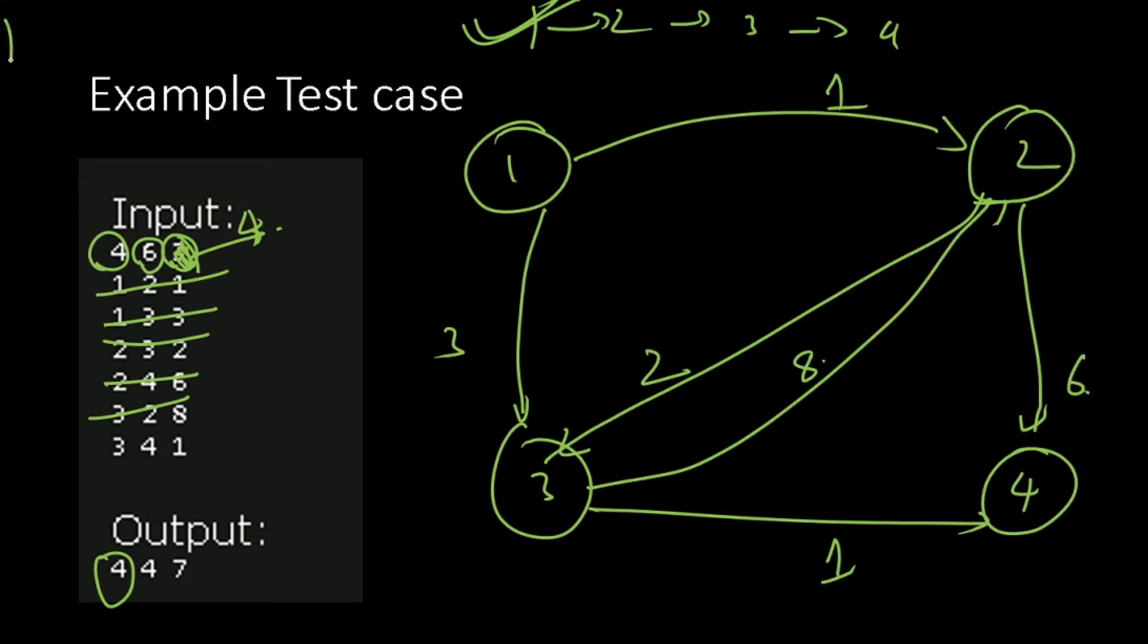The second possibility is we go from 1 to 3 directly and then 3 to 4. So 1 to 3, the cost is 3, 3 to 4, the cost is 1, so the answer is 3 plus 1 equals 4, that is the second possibility.